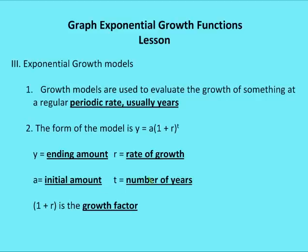For example, figuring out how many cells after five years: I start with an initial amount of 10,000 cells, and I know my rate is going to be 50% per year. My period is five years and my growth rate is 50%.